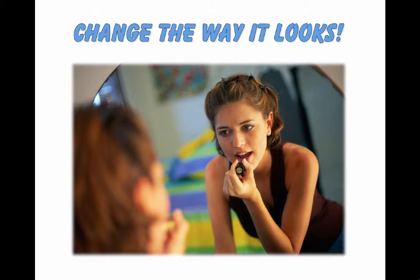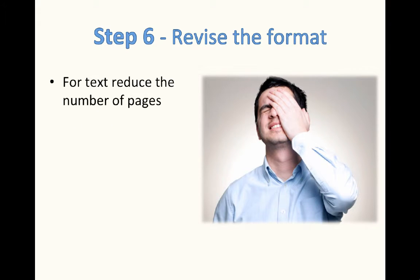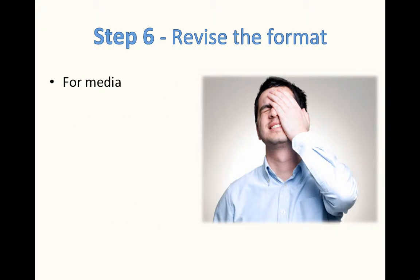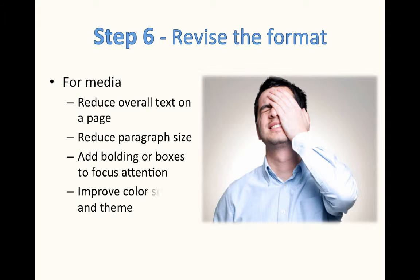You can also change the way that it looks. You can correct the errors, change the placement of the illustrations. For text copies, reduce the number of pages — which always makes it seem too long and too hard. You can change the type size or the font, or reduce or enlarge the amount of content per page. You can also have it two-sided, copied, or printed to make it look smaller. For media, you can reduce the overall text on a page to be less threatening, reduce the paragraph size so it provides more white space, add bolding or boxes to help focus attention, and improve the color scheme and theme so that it's more motivating. You can change the font type and size.